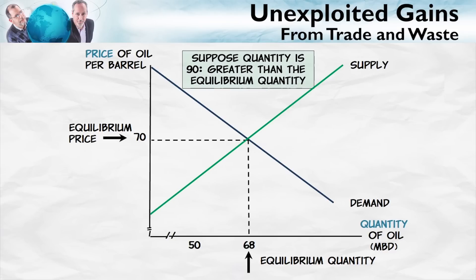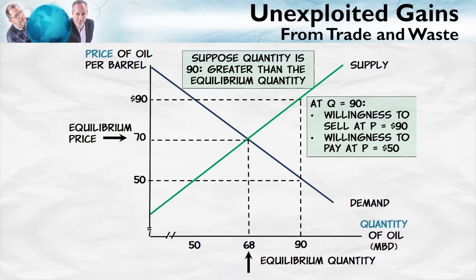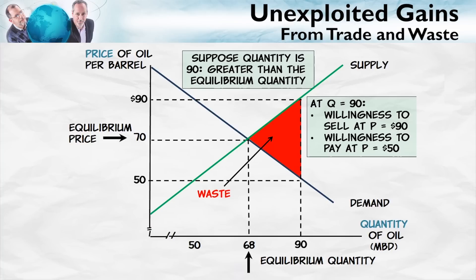In a free market, could the quantity bought and sold be greater than the equilibrium quantity? Not for any significant period of time. Imagine that 90 million barrels of oil were being bought and sold. For this last barrel of oil, the suppliers are willing to sell it for $90 — that's their cost; they require at least $90 to stay in business. On the other hand, buyers are willing to pay only $50 for that barrel. So there's a lot of waste: suppliers are spending more to produce the barrel than it's worth to buyers. At any quantity above the equilibrium quantity, there's waste, and without any intervention, suppliers are not going to be able to sell a product for more than buyers are willing to pay. So we don't expect waste to last in a free market.